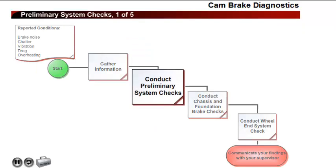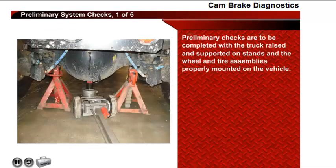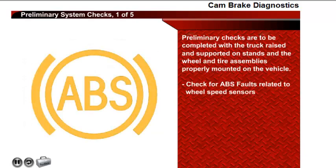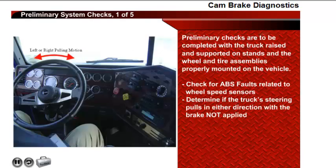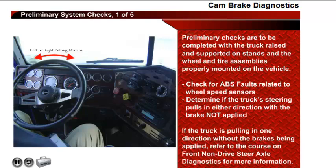The next step is the preliminary system checks. These checks are to be completed with the truck raised and supported on stands, and the wheel and tire assemblies properly mounted on the vehicle. First, check for any ABS faults related to a wheel speed sensor being out of adjustment, as this may indicate a wheel bearing problem on a particular wheel end causing a brake complaint. Next, determine if the truck's steering pulls in either direction when the brakes are not applied. If the truck is pulling in one direction without the brakes applied, look to areas other than the brakes — likely tires, alignment, or suspension components. Refer to the course on Front Non-Drive Steer Axle Diagnostics for more information.